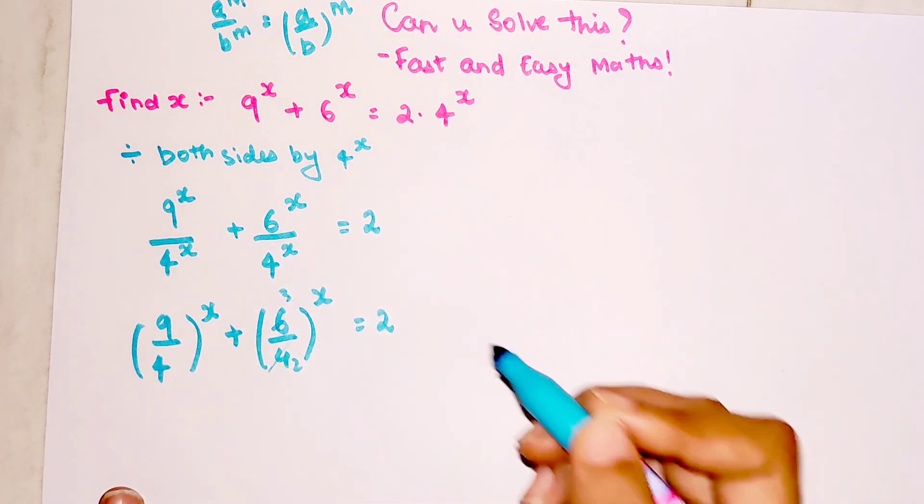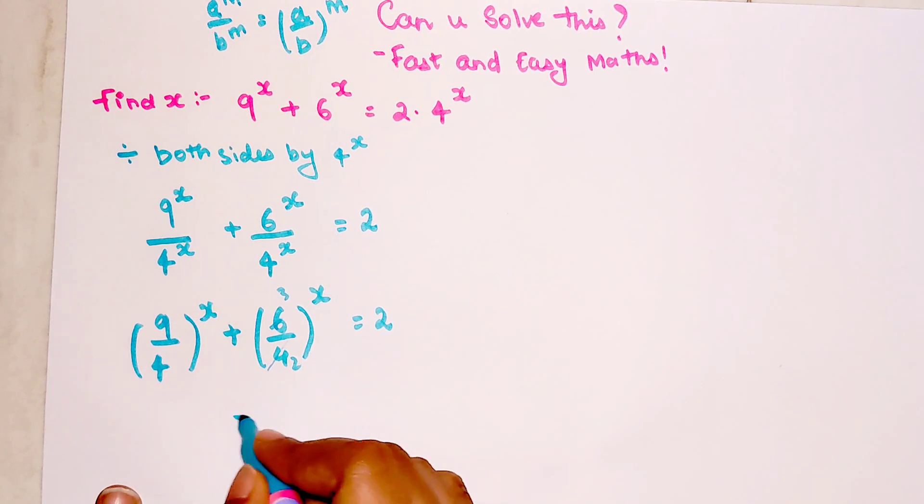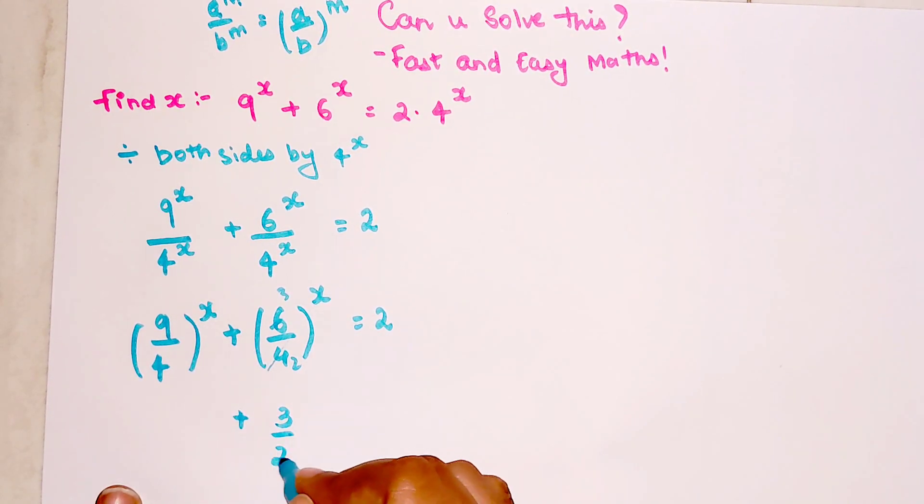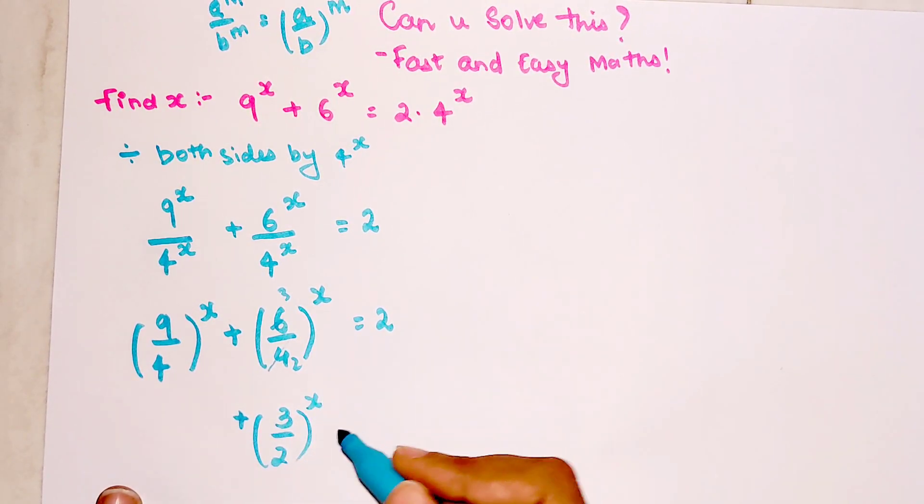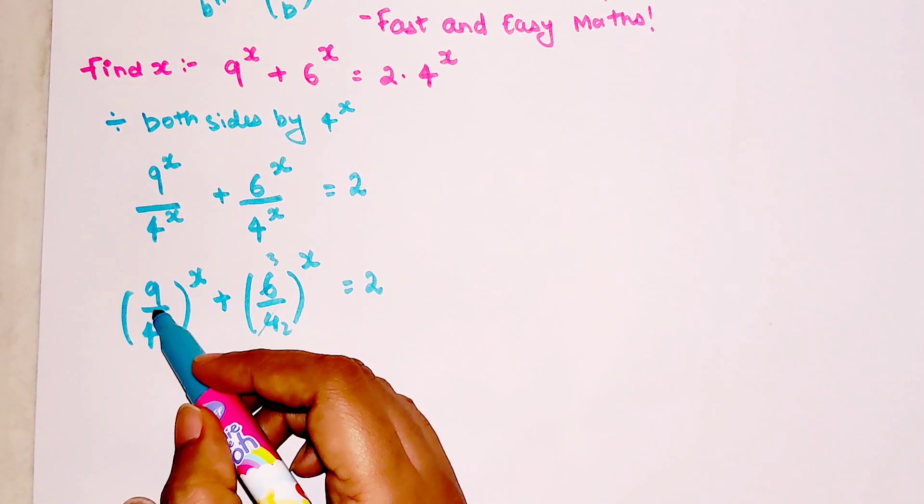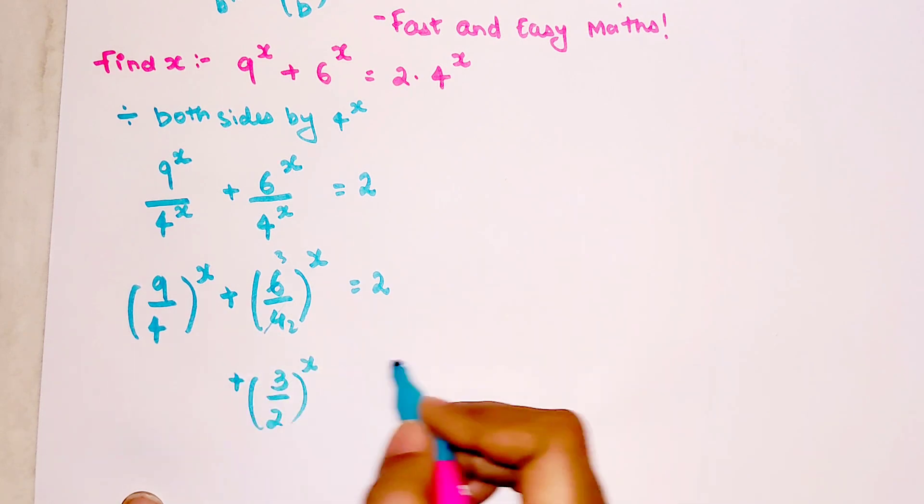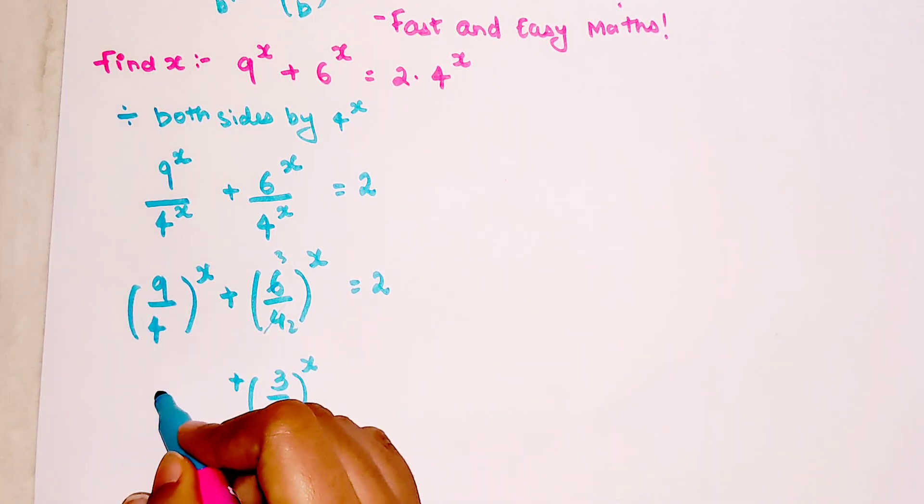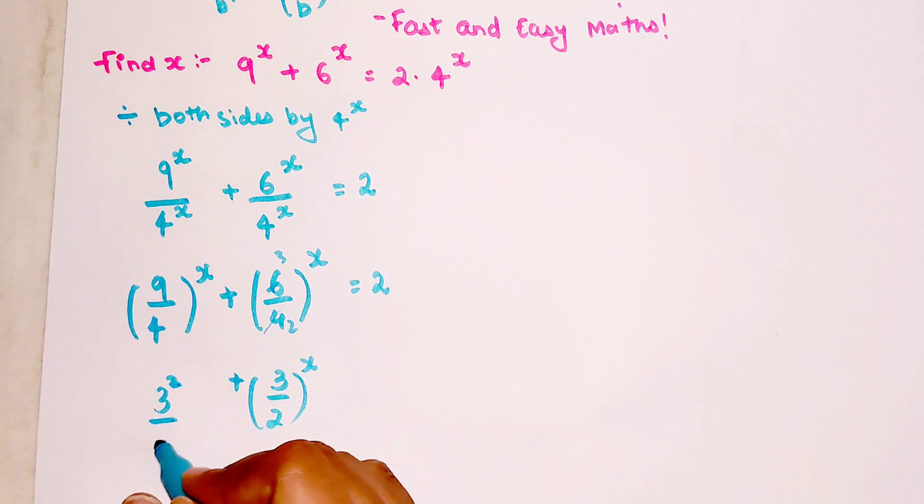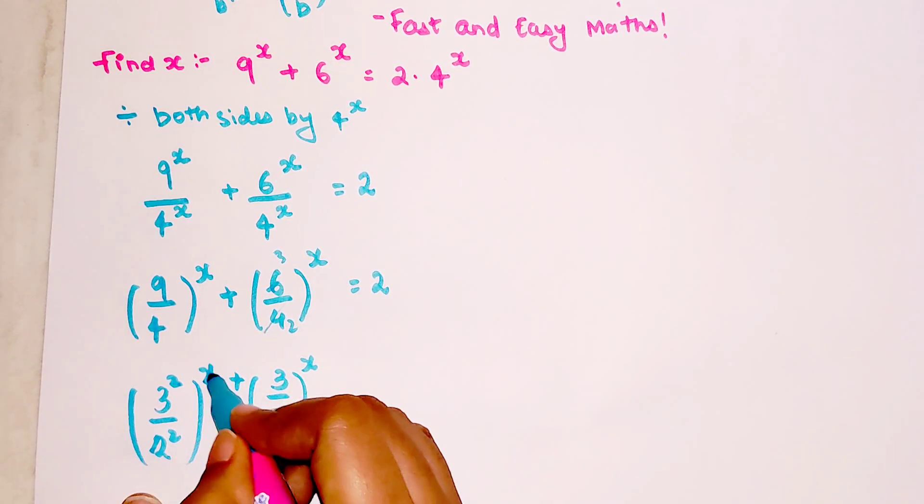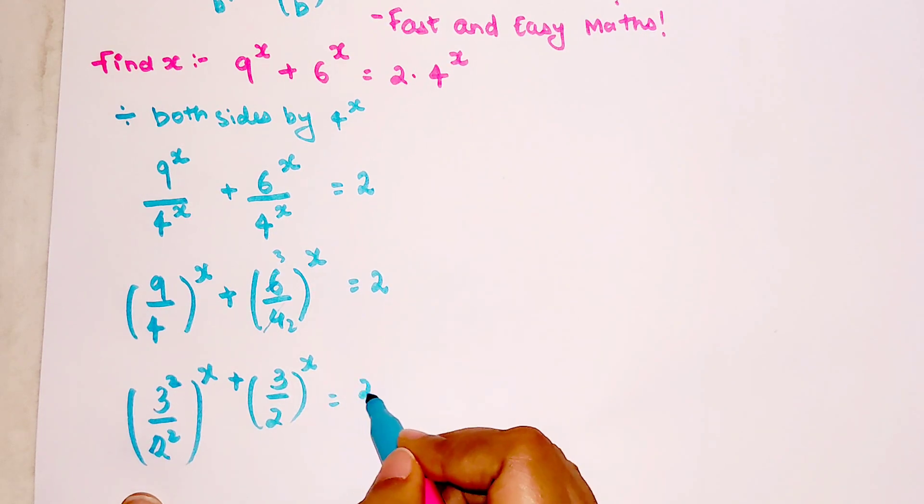Now here if you look, I can cancel them. This is reducible and both are divisible, so this becomes 3/2. So this now becomes (3/2)^x. If I can write this also in the form of 3/2, my entire equation might become much simpler. This can be written as (3^2/2^2)^x and this is still equal to 2.